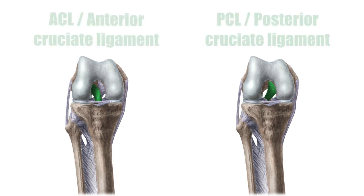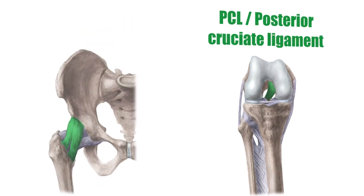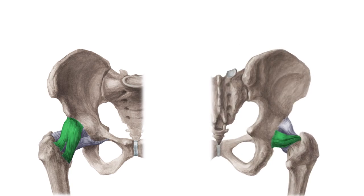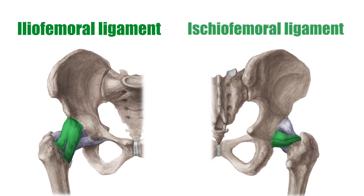The ACL, or anterior cruciate ligament, shown here in green, bonds the femur to the tibia, along with the PCL, or posterior cruciate ligament, which is now highlighted. Here we see the iliofemoral ligament and the ischiofemoral ligament, which connect the hip bone to the femur.